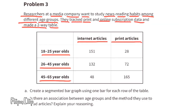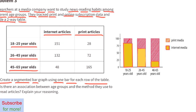Problem 3: Researchers at a media company want to study news reading habits among different age groups. They tracked print and online subscription data and made a two-way table. Part A: Create a segmented bar graph using one bar for each row of the table. These segmented bar graphs represent the percentage of media consumption for each age group.